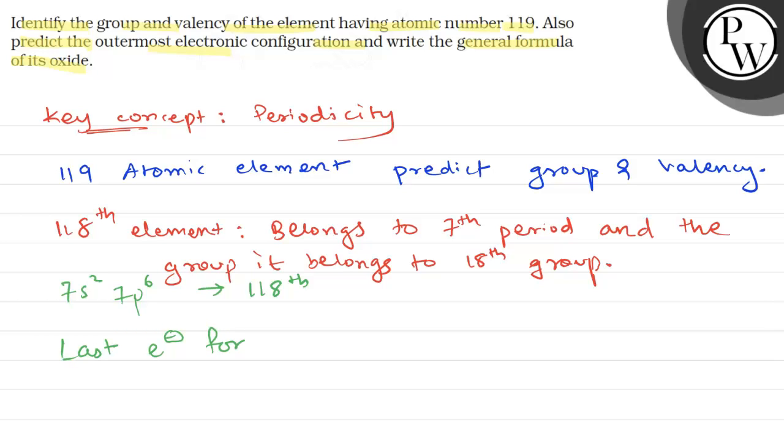And here, the nearest noble gas to this 118th element is radon. So we will have to add radon over here. This is the electronic configuration of 118th element. So after this, last electron for 119th element is going to enter...